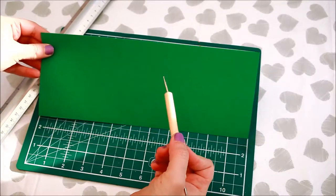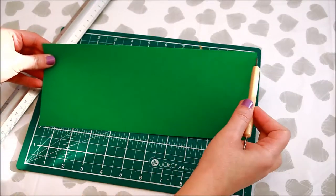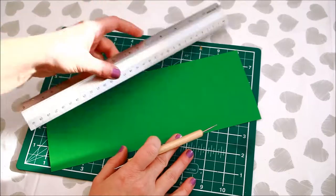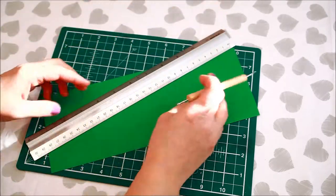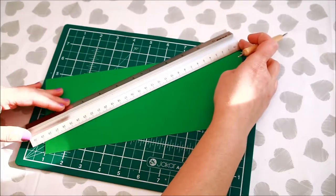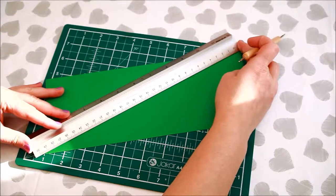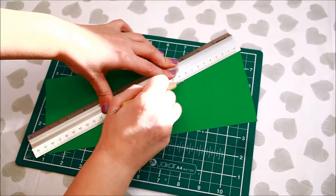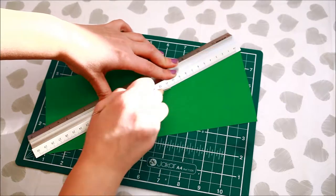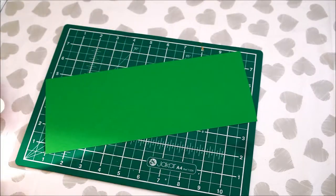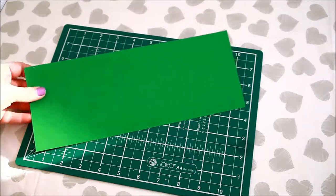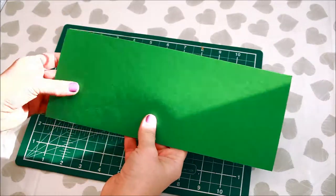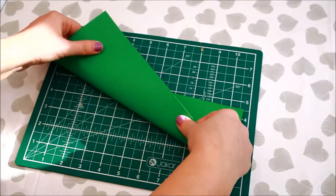Now, you need to score your card on an angle. I'm using my ruler and the embossing stylus to do so. Then fold the scored line and burnish with the bone folder.